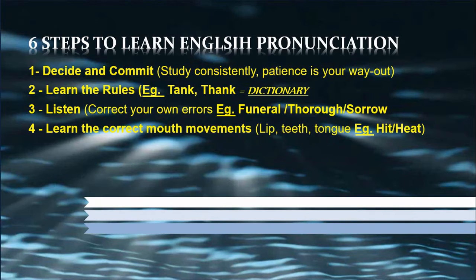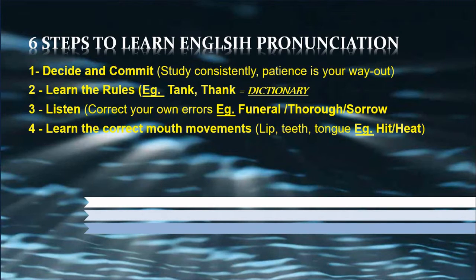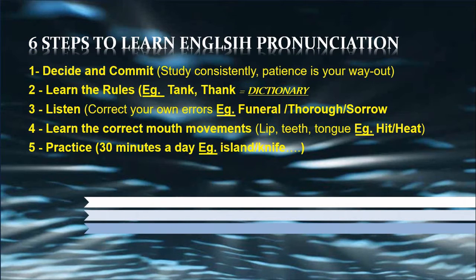Step four: learn the correct mouth movements. To have the correct pronunciation, you need to work on your lips, teeth, and tongue — this is how you create the correct sounds. You can even watch others while they utter words. For instance, long and short vowels like 'hit' and 'heat' seem similar but are a little bit different. The first uses a short vowel, the second a long vowel. With correct lip, teeth, and tongue positions, you can create this pronunciation.